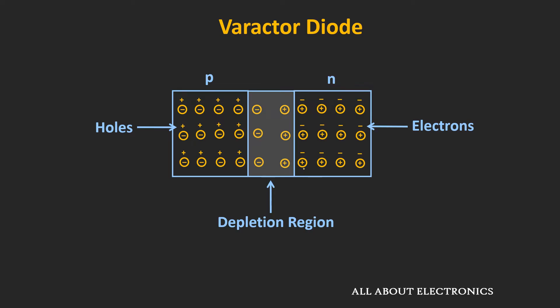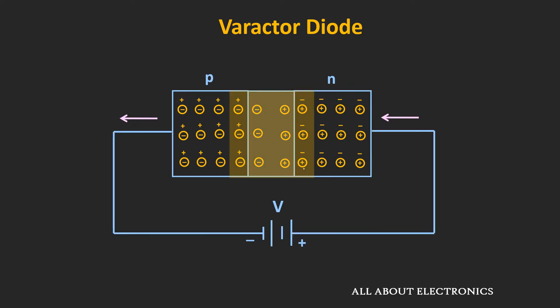In this P-N junction diode, as we change the applied reverse bias voltage, the width of the depletion region changes. As we increase the applied reverse bias voltage, the width of the depletion region will also increase. And as the depletion region width increases, from the capacitance equation we can say that the value of capacitance will reduce. This means capacitance is inversely proportional to the applied reverse bias voltage.